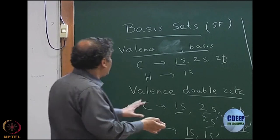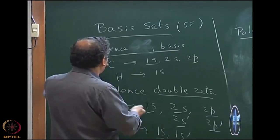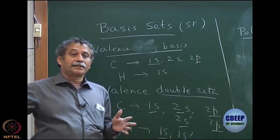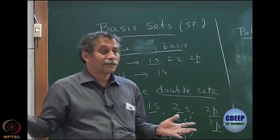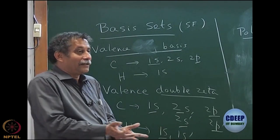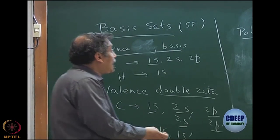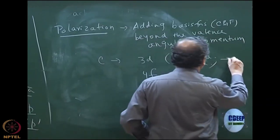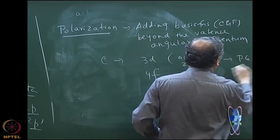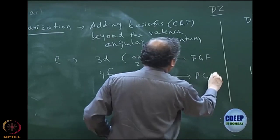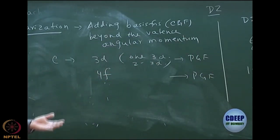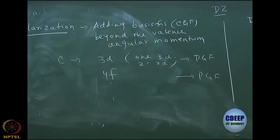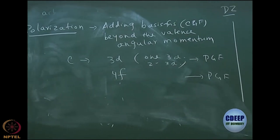Remember, the contracted Gaussian A_mu — these A_mu's — the basis set is only there to expand the molecular orbitals, and the philosophy is: more is merrier. So there is no reason to stop at P. Each of these D and F functions will again be expanded in terms of primitive Gaussians — exactly the same philosophy — and you keep doing the integral calculations.